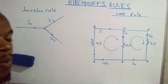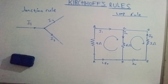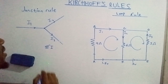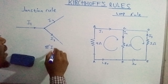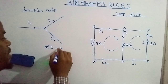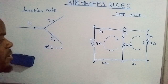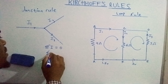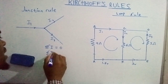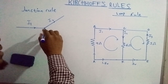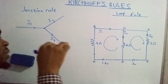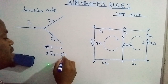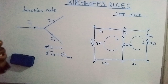So what does the junction rule state? It states that the algebraic sum of the currents is equal to zero. This implies that the sum of the currents entering the junction is equal to the sum of the currents leaving the junction.